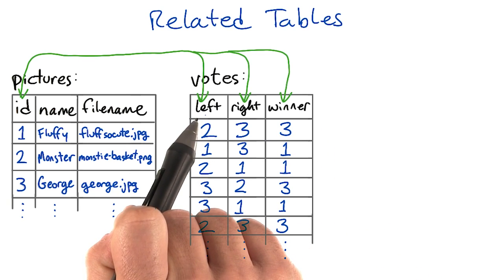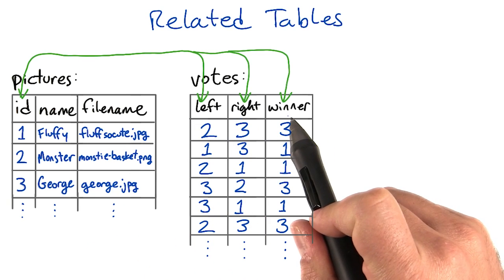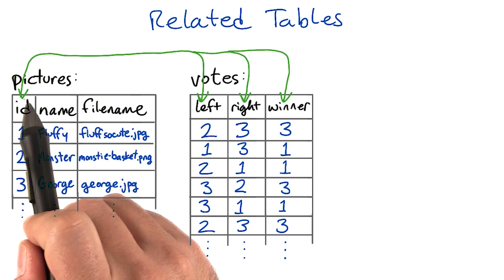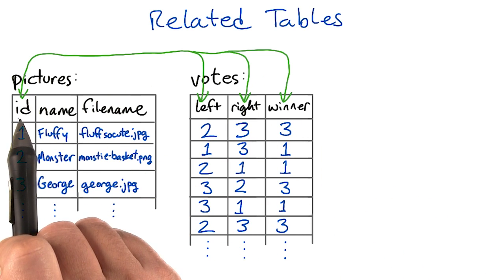In the votes table, the columns are called left, right, and winner, but they match up to the column called ID in the pictures table.